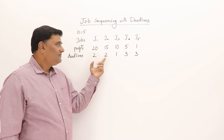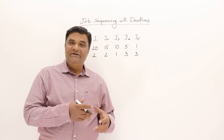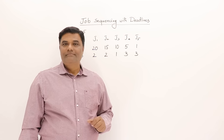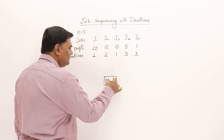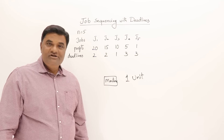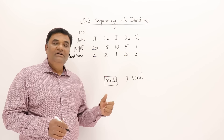Job one should be completed within deadline two, job two also two, job three is one — every job has some deadline. The problem is: jobs are given, every job has some profit, and you have to complete that job within its deadline. The key assumption is that each job takes one unit of time for completion — let's assume one unit is one hour.